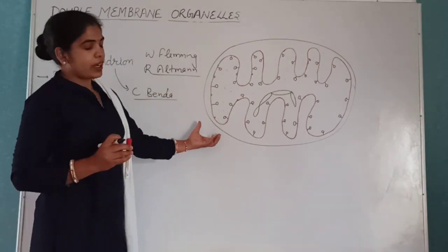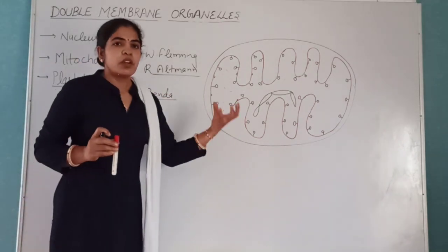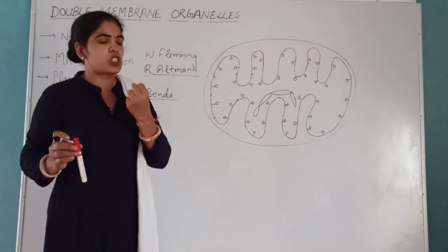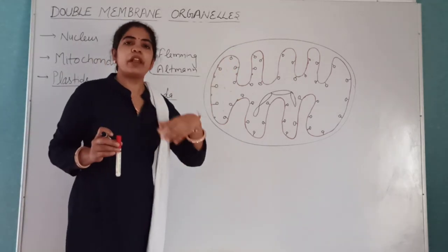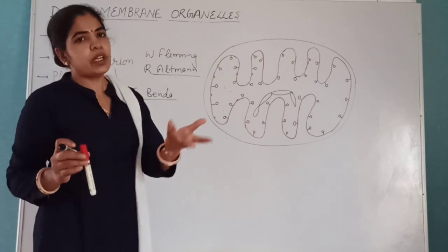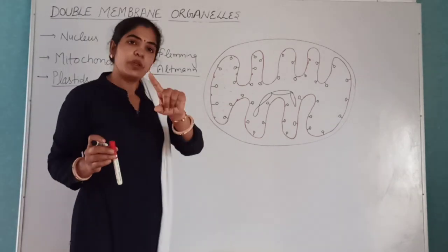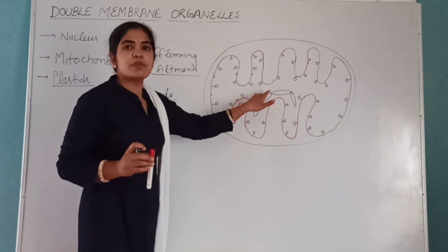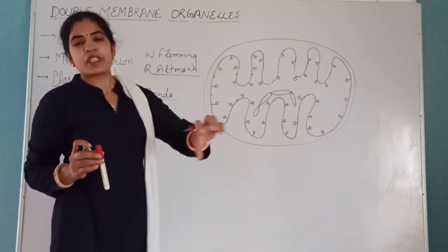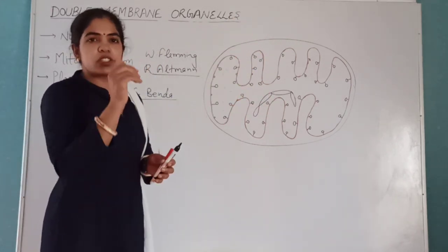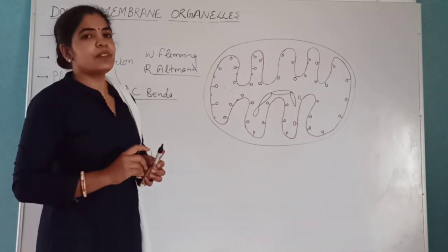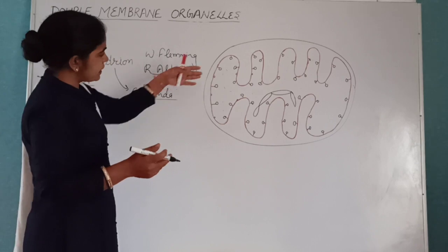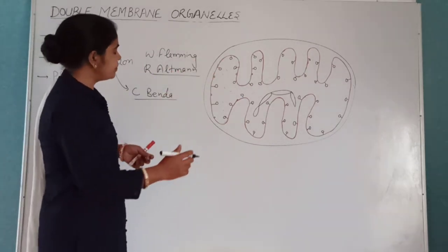Mitochondria are rounded, disc-shaped, or sausage-shaped structures present in all cells, whether plant or animal cells, except in prokaryotes. In place of mitochondria, mesosomes are present — that is, infoldings of plasma membranes. Mitochondria are double membrane organelles, as you can see in this diagram.